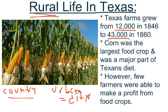Corn, as you can see in this picture, was the largest food crop and a major part of the Texan diet. A food crop is a crop where you can make profits out of selling things you have grown. However, very few farmers were able to make a profit from these food crops.